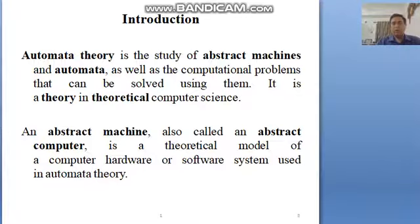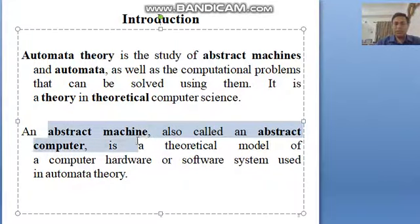Automata Theory means that any hardware can make us automatic. So in order to make us automatic, we can study the models of computational models or abstract machines. What is abstract machines? An abstract machine is also called an abstract computer. It is a theoretical model of a computer hardware or software system used in Automata Theory.